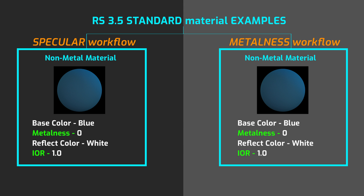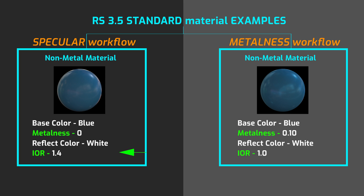If you would like to create a dielectric material in Metalness workflow, the Metalness value controls the reflectivity of the dielectric material. This value can be exactly zero, or in the range of 0 to 0.99, but never exactly 1. And the IOR value is 1. If you would like to create a dielectric or any other type of material in Specular workflow, IOR values depend on the material — for example, plastic has IOR 1.46 but glass has IOR 1.52.